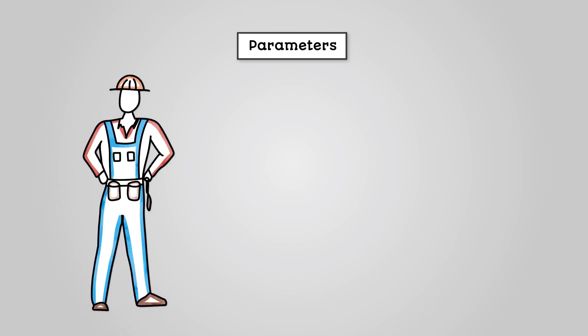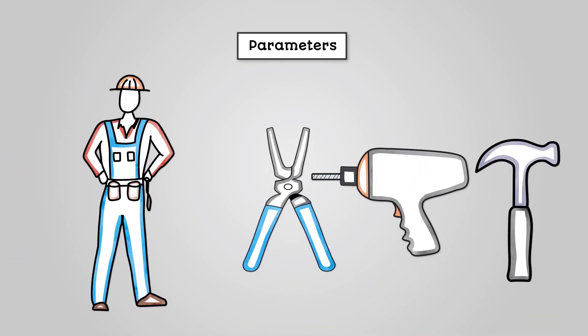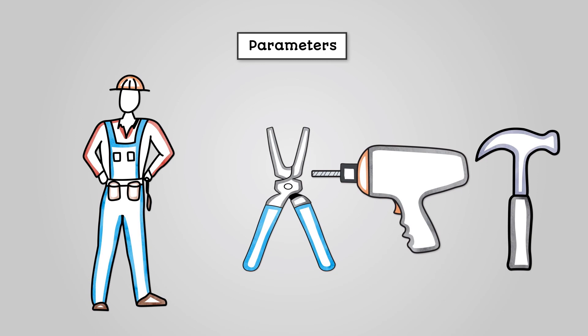When using procedures we can also use parameters. A parameter is anything your procedure might need to do its job. It is like a variable that we can use to pass data to the subroutine when we call it.